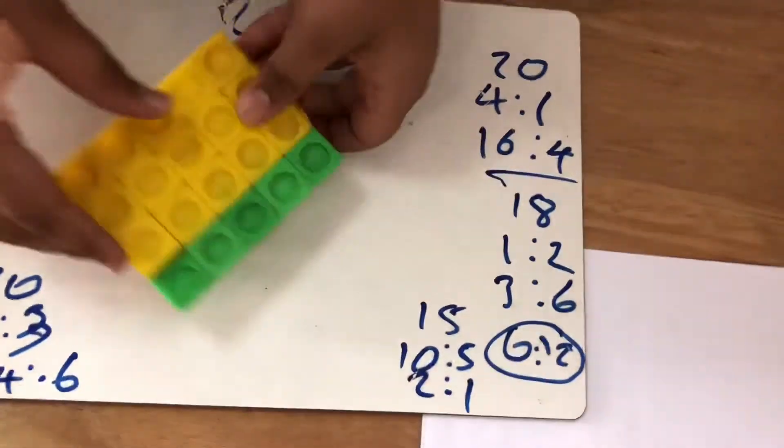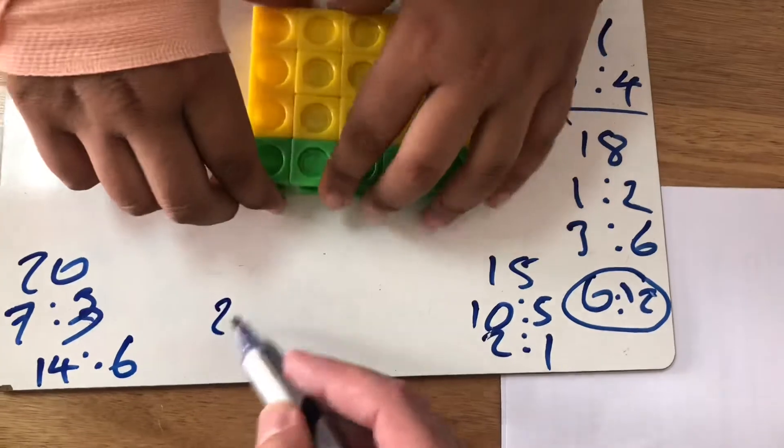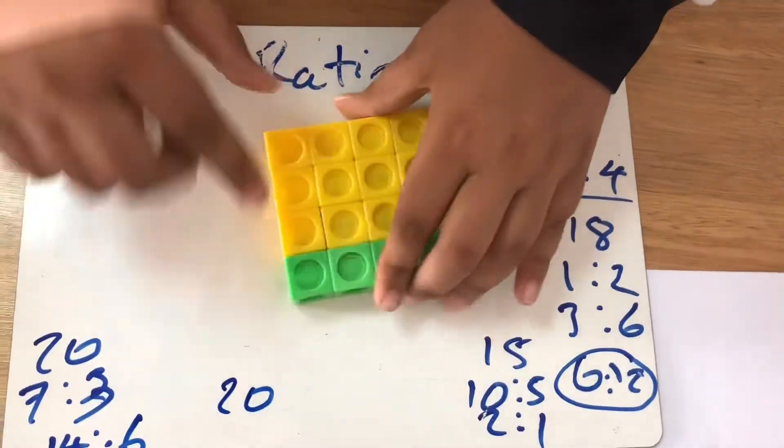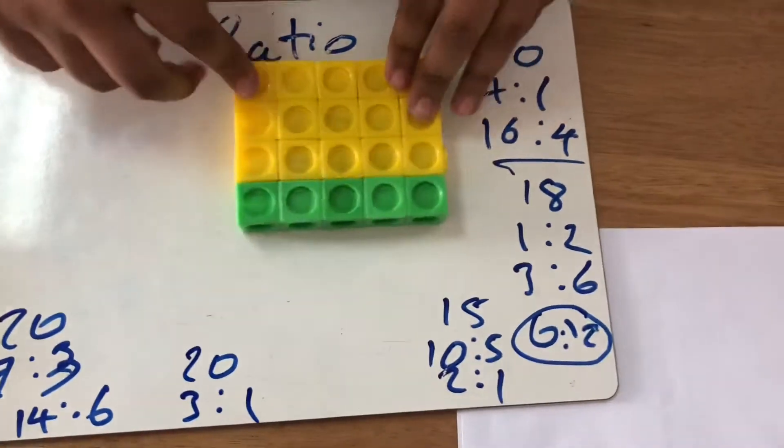Let's see what we've got next. So I have 20 again. So from 20 I'm going to break this up into for every three blocks you get one green. So you're breaking 20 up in the ratio of 3 to 1.